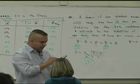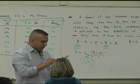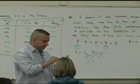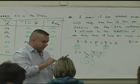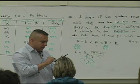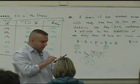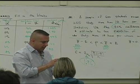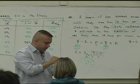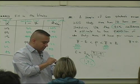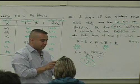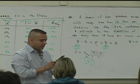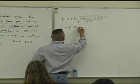1.96 times square root of 0.425 times, what's 1 minus 0.425? 0.575. We've got to divide by N, right? The square root of 0.425 times 0.575 divided by 600. What do you guys get as an error? 0.03955.